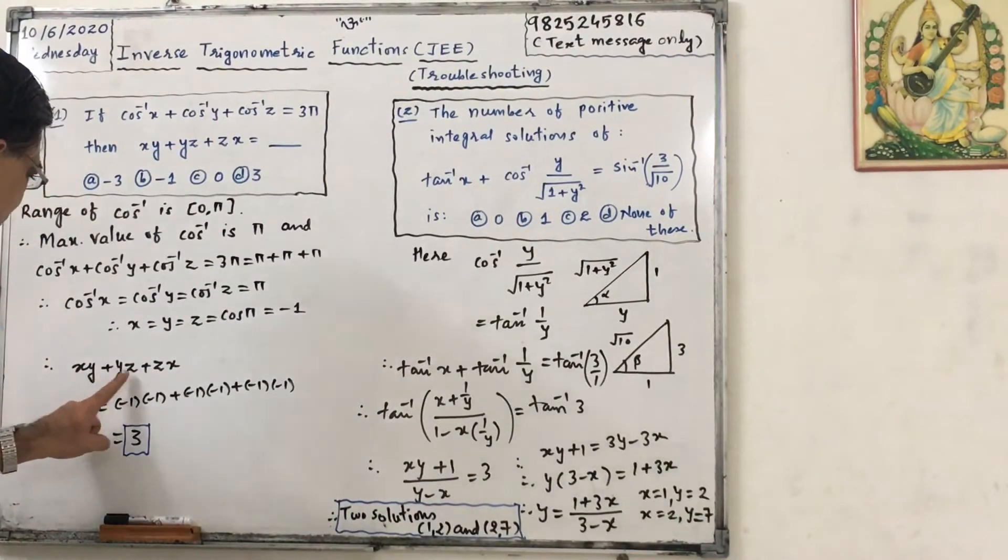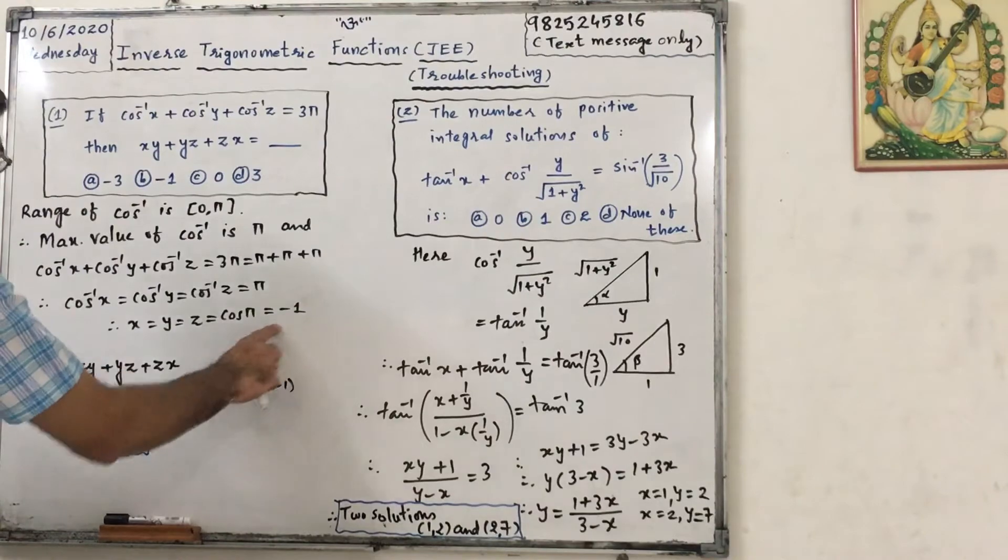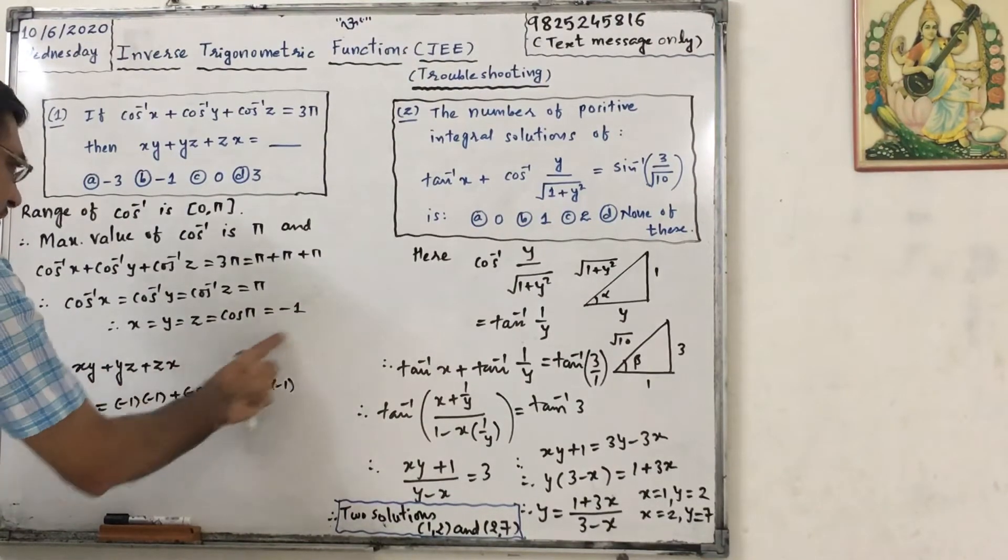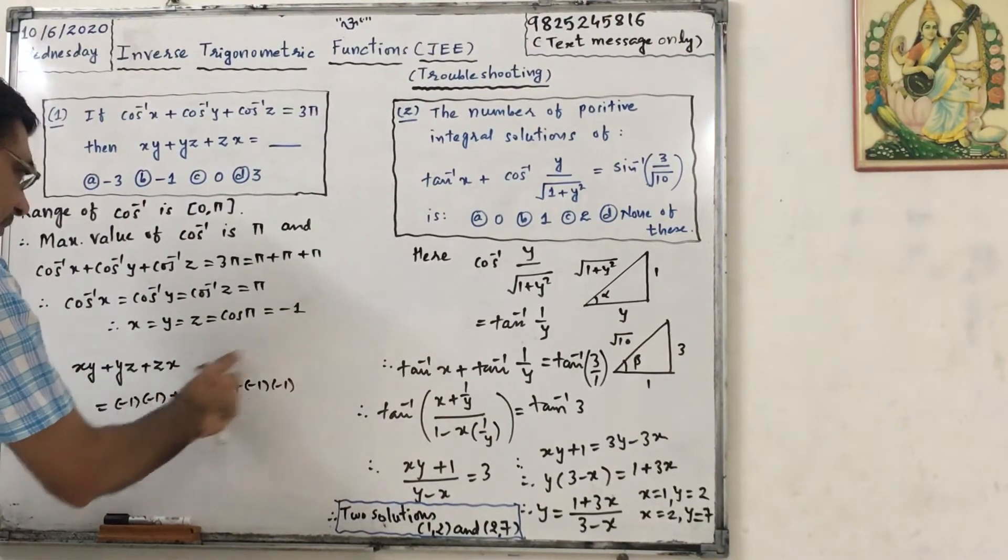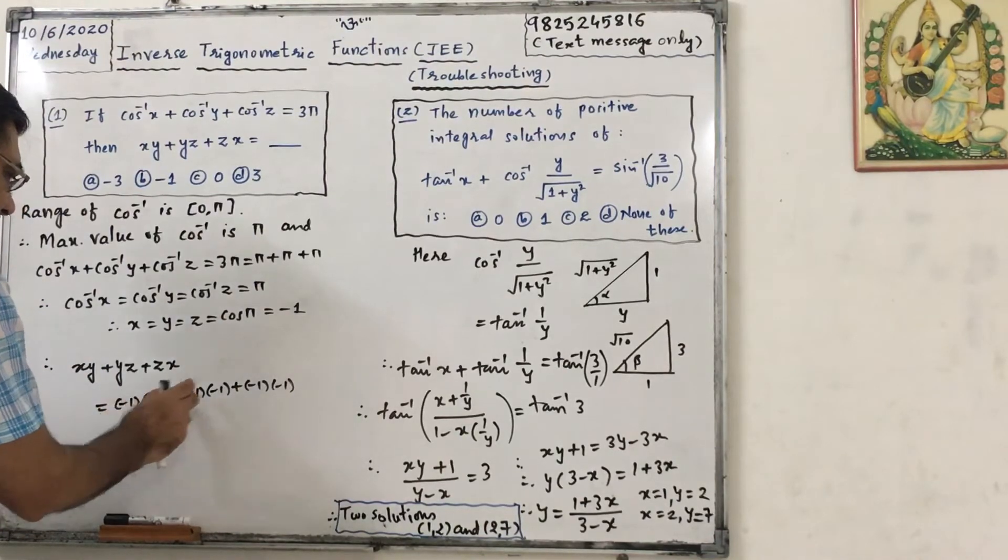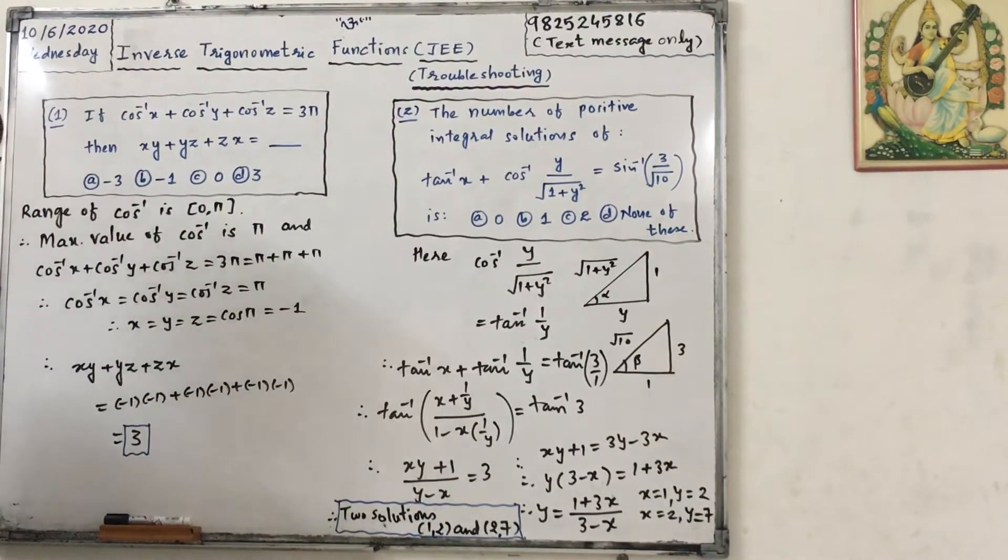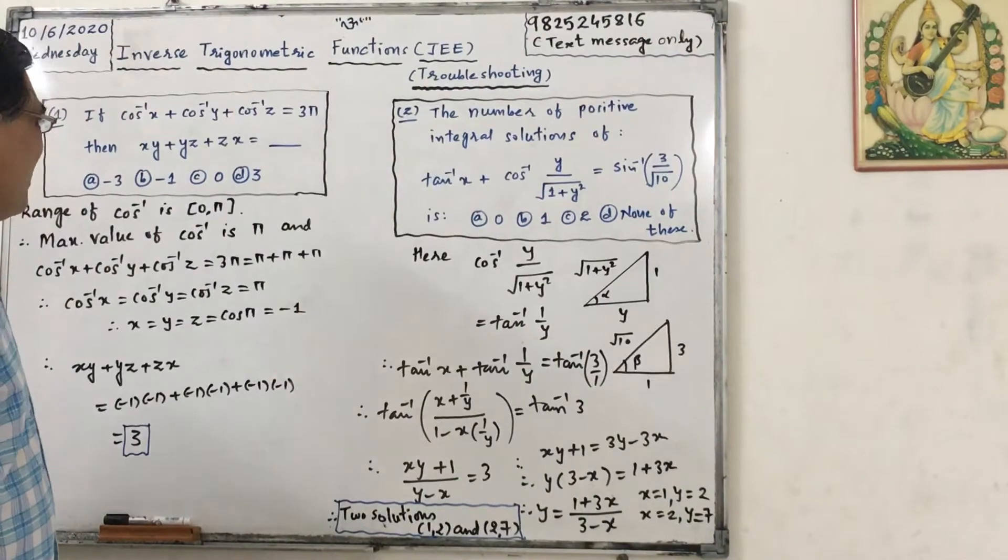Now putting here xy plus yz plus zx, that is minus 1 into minus 1 plus minus 1 into minus 1 plus minus 1 into minus 1, that is 1 plus 1 plus 1, that is 3. Okay, so the answer is D.